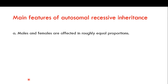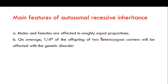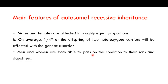The main features of autosomal recessive inheritance: first, males and females are affected in roughly equal proportions — unlike X-linked inheritance, which we'll cover in the next video, where you see unequal distribution. On average, one-fourth of the offspring of two heterozygous carriers will be affected with the genetic disorder, representing a 25% chance.